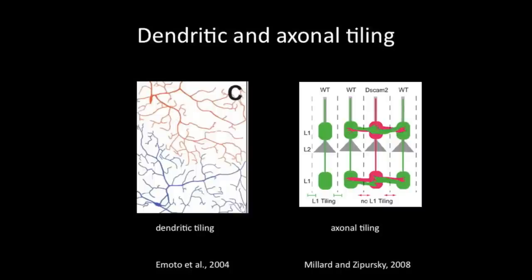Similar to using tiles to cover the roof of a house, in neuroscience, tiling refers to the process of establishing non-overlapping synaptic domains between the same classes of neurons. Two forms of tiling have been described in the literature. The best documented tiling is the dendritic tiling shown on the left here, in which dendritic arbors from the same class of sensory neurons or interneurons cover the complete receptor field in a non-redundant manner.